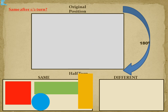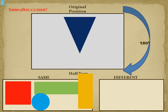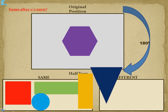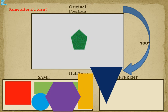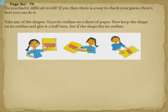Next, a triangle pointing upward: after half a turn the point comes down, so now it looks different and is placed in the 'different' group. A hexagon with six sides: after half a turn there is no difference — it looks the same. Another shape with a pointed top and flat base: after half a turn it gets inverted, the base goes up and the point goes down, so it is different.